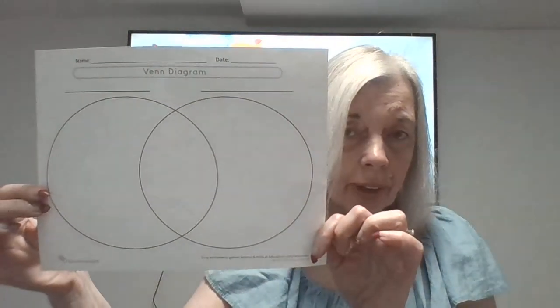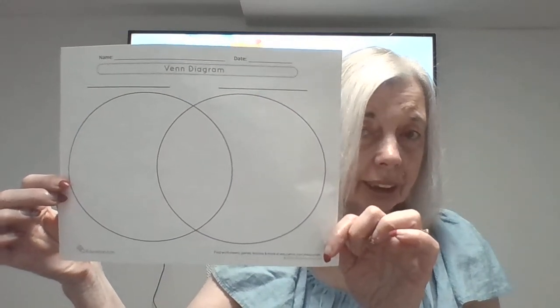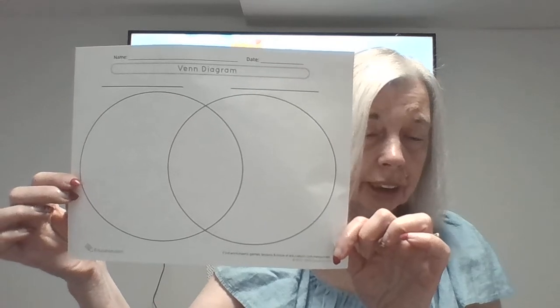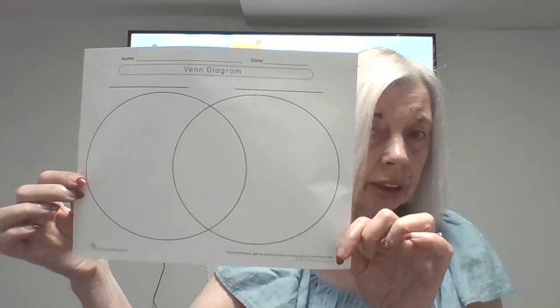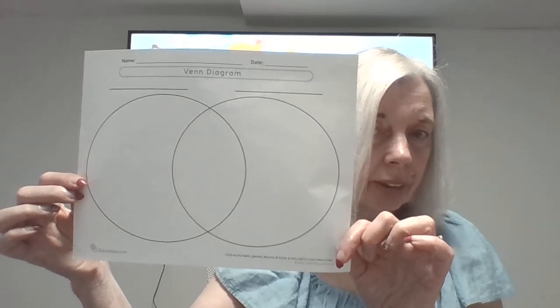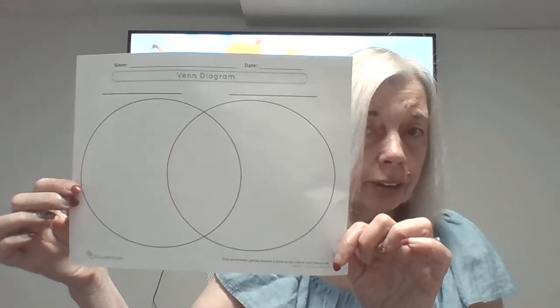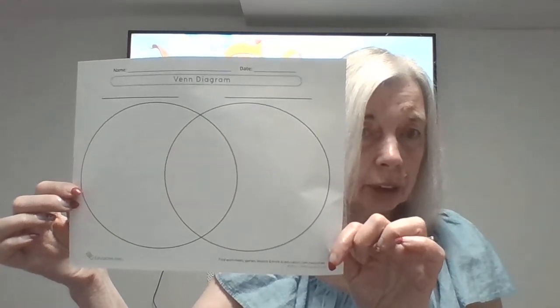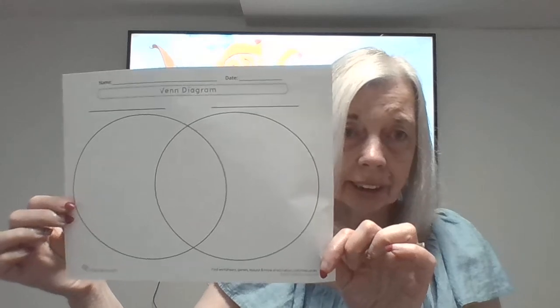Barbara and Mojica here. Welcome back to the Two Minute Teacher — two minute mini lessons that you can use with your child. Today I'd like to talk about a Venn diagram. A Venn diagram simply consists of two circles, one drawn overlapping the other. You can use a Venn diagram to compare and contrast different things.